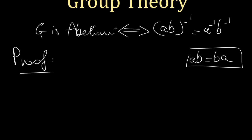The problem says if and only if, which means we have to prove both directions: that G being abelian implies this statement is true, and also that if this statement is true then G is abelian. So it's a round trip. Let's go one direction first.